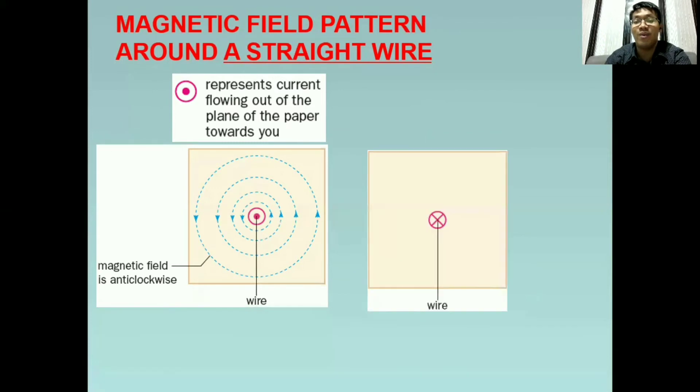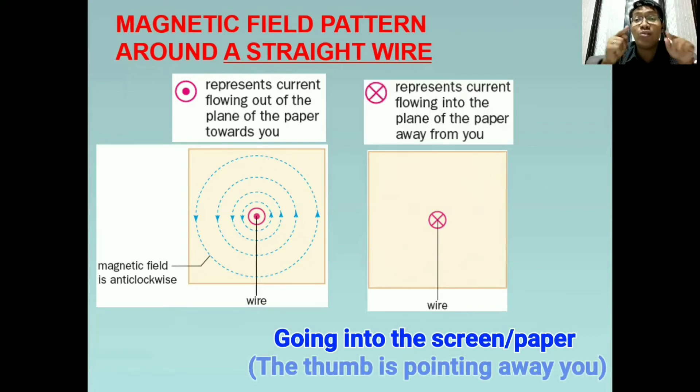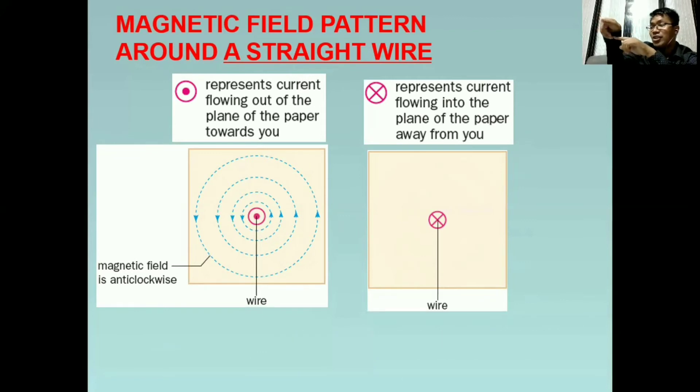How about the other one? So we use the symbol X and it indicates that the current is flowing into the plane or away from you. So we will just point our thumb away from us. Parang ganyan. So kung may kita ninyo ang direction ng daliri mo pag ginawa mo to ay clockwise. So parang downward lang na current then itwis mo lang na ganyan. So they are clockwise. And it looks like this.